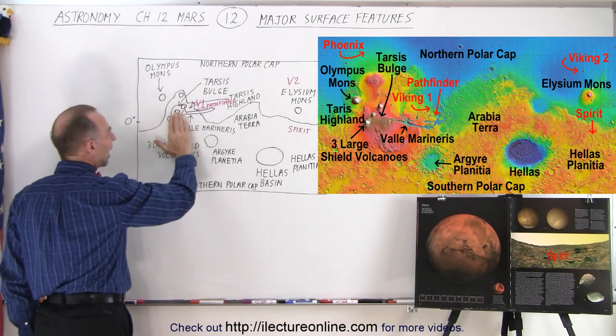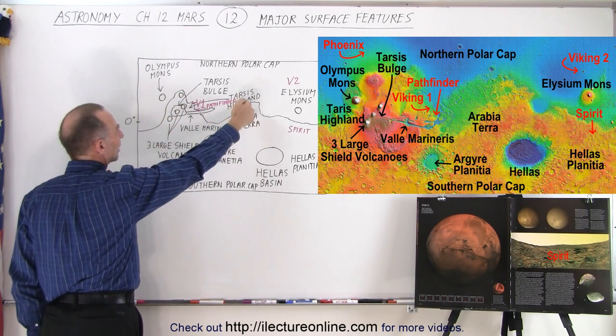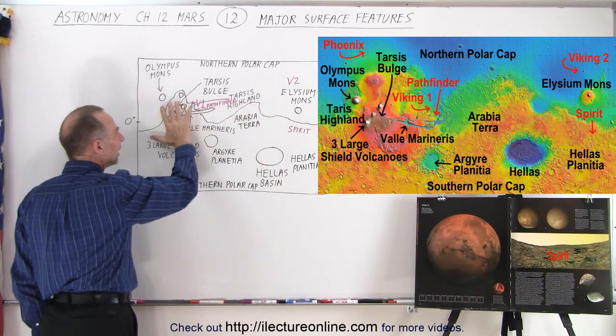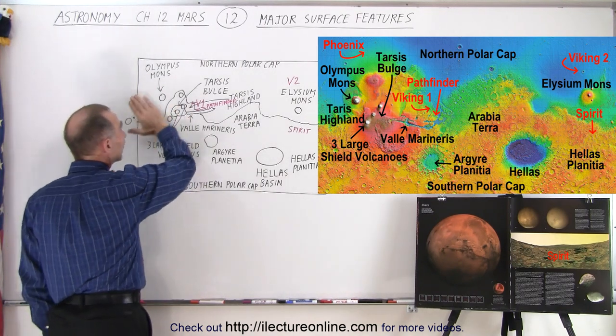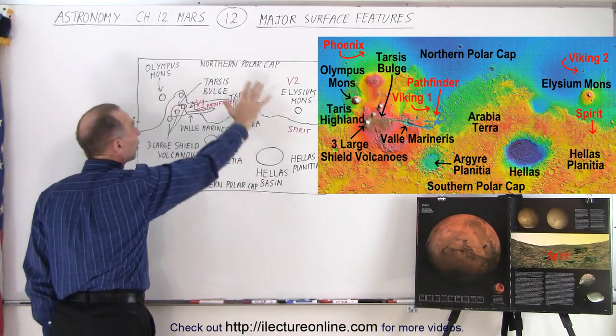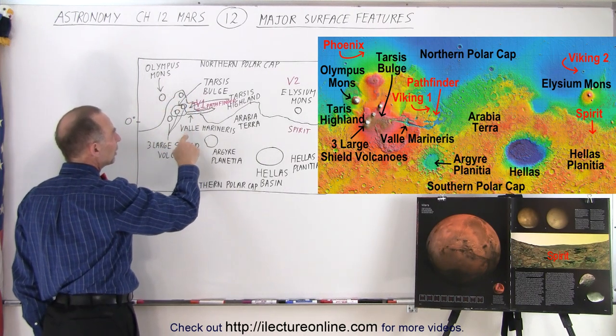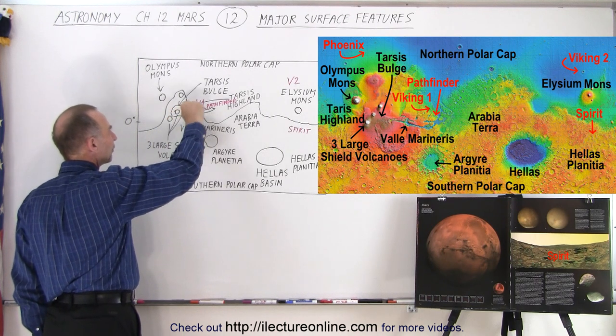Then over here, we have the highlands of Mars. This is known as the Tarsus Highland. I drew an arrow there because there's so much going on in here, but this whole region is about 10 kilometers or 6 miles higher than the typical elevation of Mars around it. So this is a huge elevated region. On that elevated region, we find three very large shield volcanoes in a perfect row.